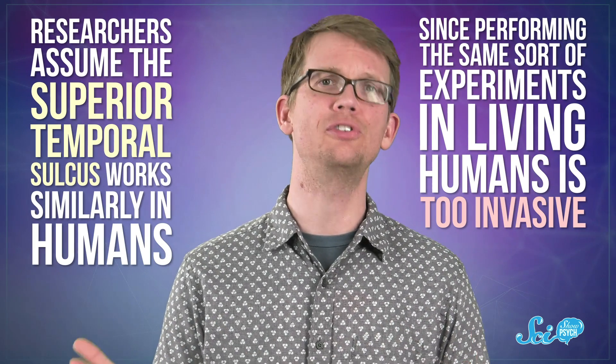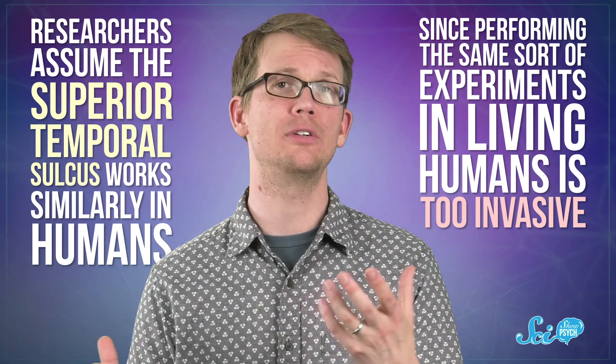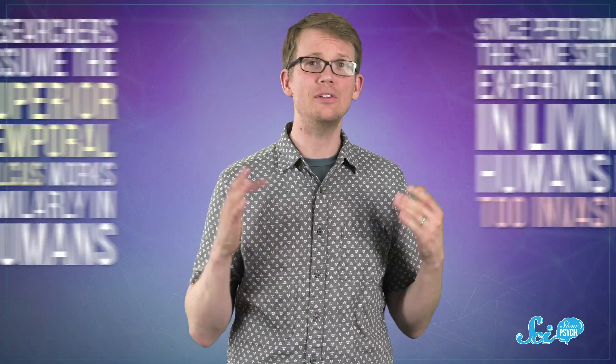Researchers assume the superior temporal sulcus works similarly in humans, since performing the same sort of experiments in living humans is too invasive. Now, it's easy enough for your brain to figure out where a gaze is pointed when you're looking right at someone.